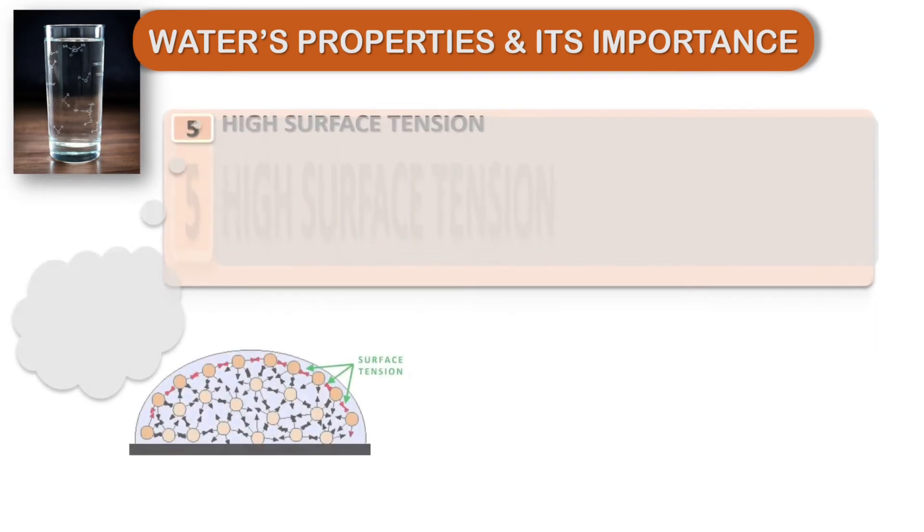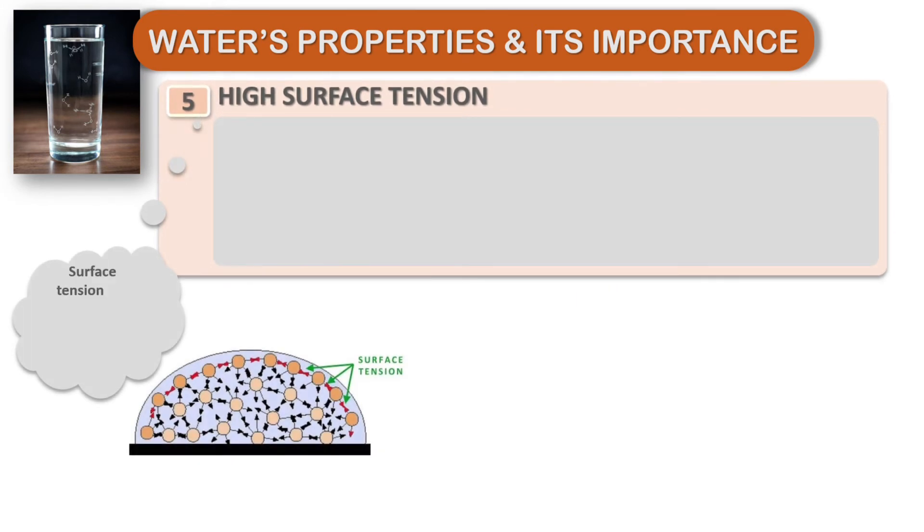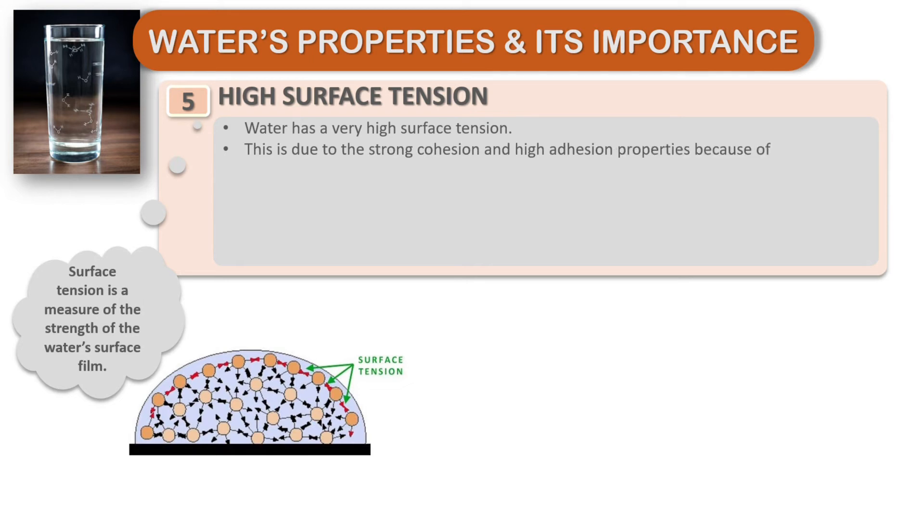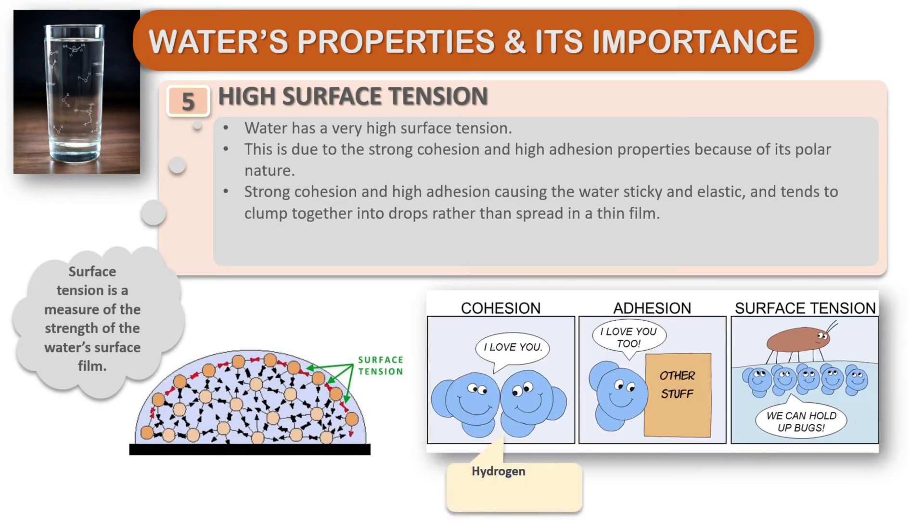Water has high surface tension. Surface tension is a measure of the strength of the water's surface film. Water has a very high surface tension. This is due to strong cohesion and high adhesion properties because of its polar nature. Strong cohesion and high adhesion cause the water to be sticky and elastic and tend to clump together into drops rather than spread in a thin film.